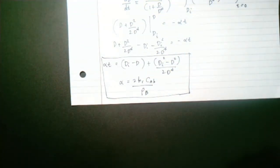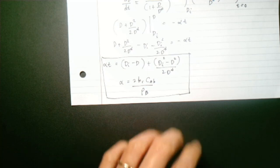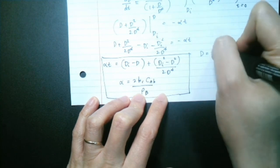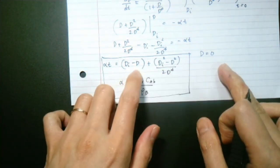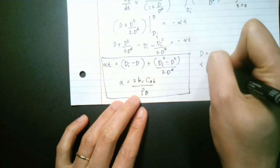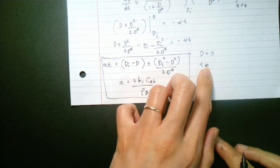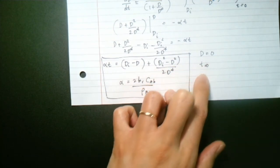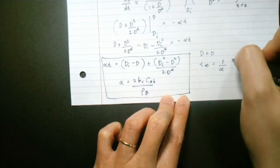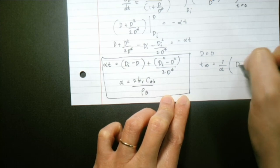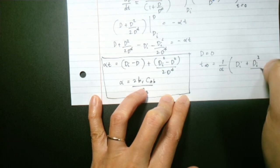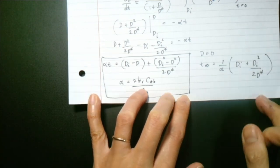The time it takes for the solid particle to completely dissolve is found by substituting D = 0. The total dissolution time T-infinity equals (1/α)·[DI + DI²/(2D-star)], where α = 2·KR·CAB/ρB.